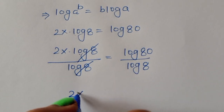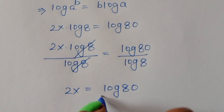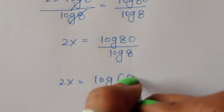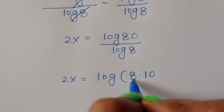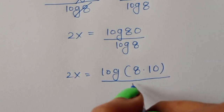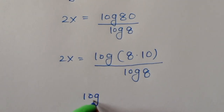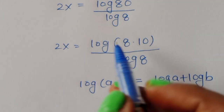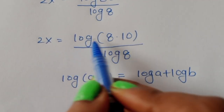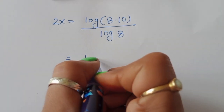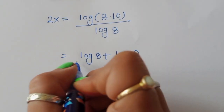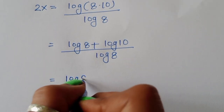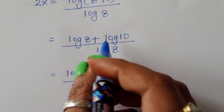Dividing both sides by log(8): 2x·log(8) / log(8) = log(80) / log(8). The log(8) terms cancel, giving 2x = log(80) / log(8). We can write 80 as 8 times 10, so 2x = log(8×10) / log(8). Using the product rule, log(8×10) = log(8) + log(10).